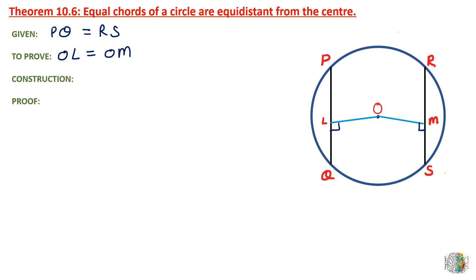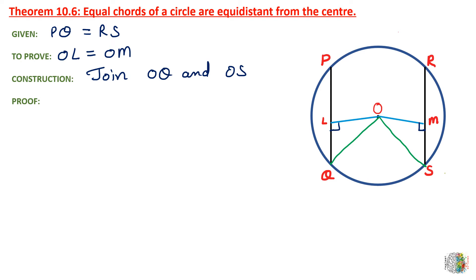Now, to prove this, what do we do? We join O to Q and join O to S. So the construction is: Join OQ and OS. Now here we have two triangles — triangle OQL and triangle OSM.